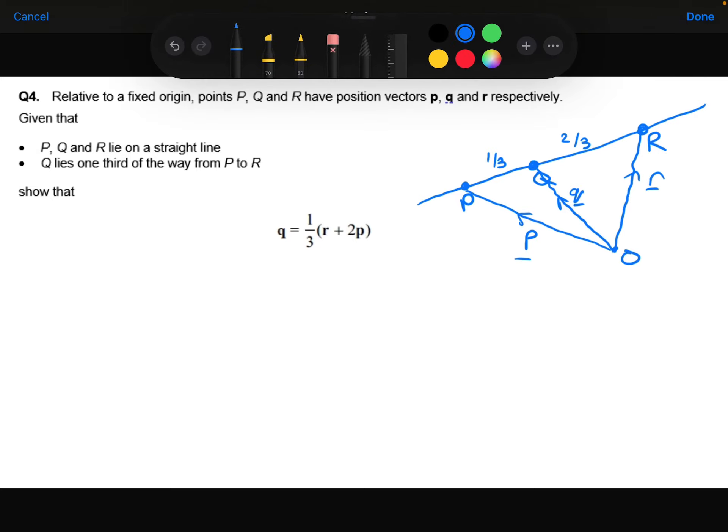Right, using this information, I can get an expression for the vector from P to R. So P to R is going to be the same as P to O, which is minus p, plus O to R, which is r. So minus p plus r.